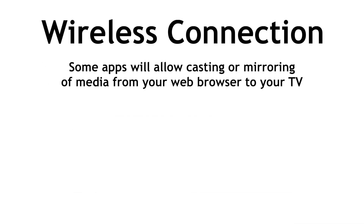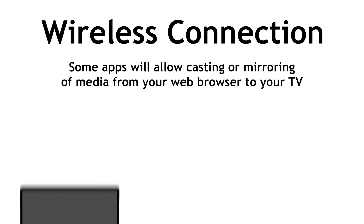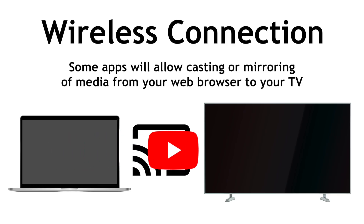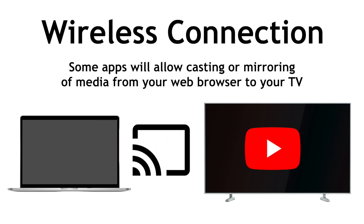Some apps will allow casting or mirroring of media from your web browser to your TV. For example, if you have the YouTube app on your smart TV, you can click the cast icon on YouTube from your computer's web browser, then select your smart TV from the list of devices to send the video you're watching to your TV screen.